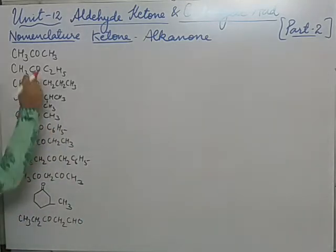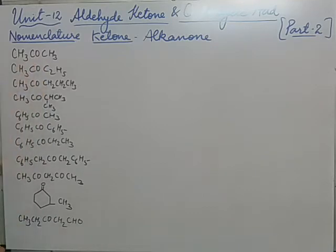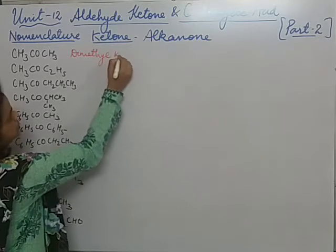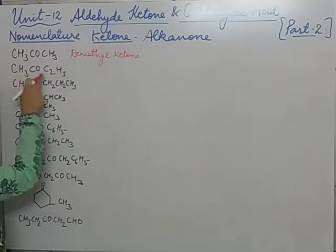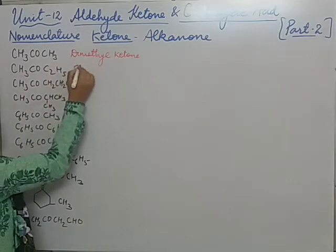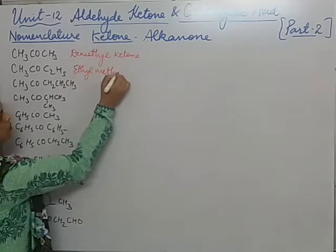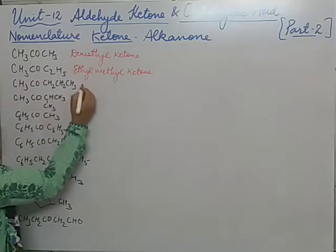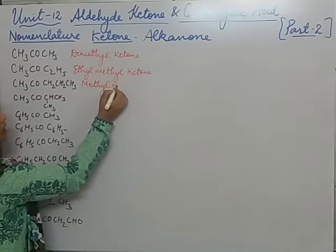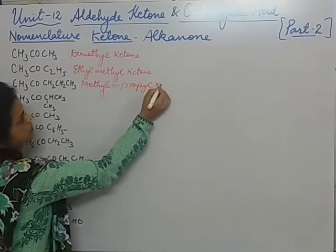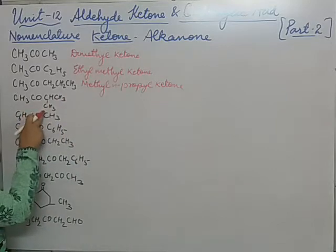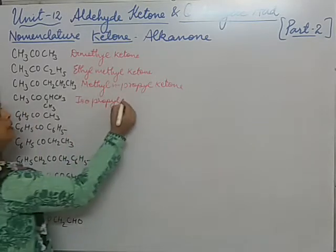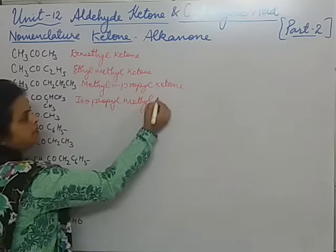So let's start. Here this is the carbonyl part and two alkyl groups — both are methyl. So its common name will be dimethyl ketone. Now here we are having one methyl and one ethyl. Alphabetically ethyl comes first, so we will write ethyl methyl ketone. Now here we are having methyl and n-propyl, so we will write methyl n-propyl ketone. Now this is isopropyl and this is methyl, so we will write isopropyl methyl ketone.